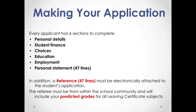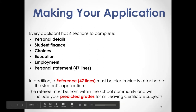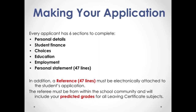Each applicant has six sections to complete: personal details, student finance information, choices, education, employment, and their personal statement. In addition, a reference must be electronically attached to the application. The referee must be from within the school community and will add the predicted grades received from subject teachers. Students should ask the teacher well in advance, as the personal statement is 47 lines and the teacher's reference is also 47 lines.